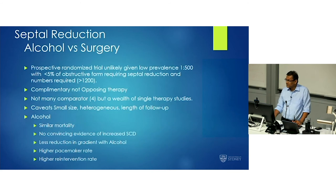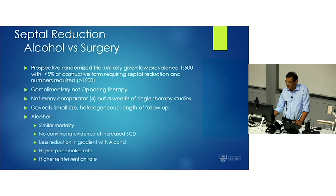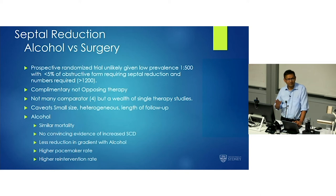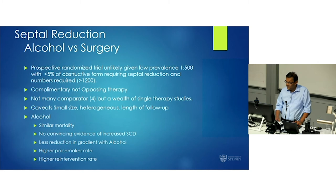It's frustrating looking at the data because there's no prospective randomised data — it's a low-prevalence condition with small patient numbers and the numbers required would be too high. We should view the two approaches as complementary, not opposing. The literature caveats include small size, selection bias, heterogeneity, and shorter follow-up. With alcohol ablation, you have similar mortality when provided by expert teams. There doesn't seem to be convincing evidence of increased sudden cardiac death, at least in the short and intermediate term. There is less gradient reduction, a slightly higher pacemaker rate, and a higher need for re-intervention.